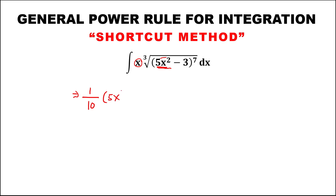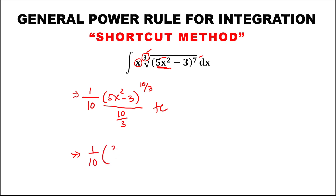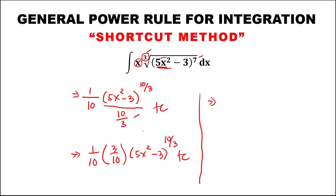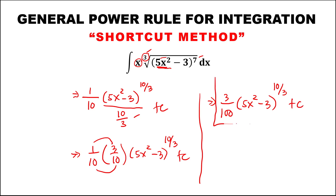Then we have (5x² - 3) to the power 7 plus 3, that's 10 over 3, over 10, then also over 10 over 3, plus C. To simplify, 1 over 10 times 3 over 10, then (5x² - 3) to the power 10 over 3, plus C. This equals 3 over 100 times (5x² - 3) to the power 10 over 3, plus C.